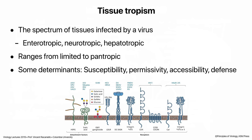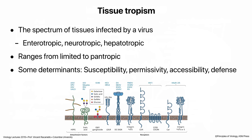Most viruses don't replicate in every tissue they enter. Tissue tropism means what tissues a virus will grow in — enterotropic, neurotropic, or hepatotropic if they only replicate in those tissues. Determinants include the receptor (susceptibility), permissivity — whether the internal environment supports replication — tissue accessibility, and active defenses. Some viruses have limited tropism and only replicate in the liver; others replicate in every tissue.